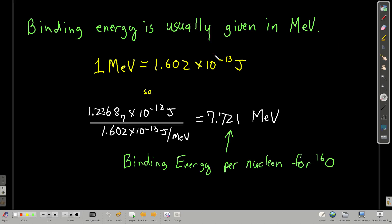So, usually when we're talking about binding energies, because these are physicists that usually deal with this stuff, we talk about mega-electron volts, and this is the conversion between mega-electron volts and joules. And so if we convert that binding energy we got per nucleon to mega-electron volts, we get 7.721 mega-electron volts. This would be the binding energy per nucleon for oxygen 16.